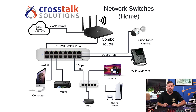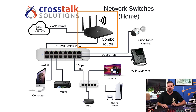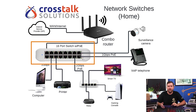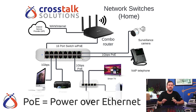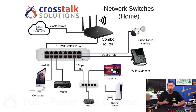Here are some examples of where you may use switches in your network. In this first example, we're using a combo router which probably has 4 or 5 switch ports on the back. I've added in a 16-port switch to expand the network's port capacity. 8 of those ports are just standard gigabit ports, and the other 8 are gigabit ports with PoE, or power over ethernet. This is a way to power devices through ethernet without the need for an additional power cable. Wireless access points, voice over IP telephones,